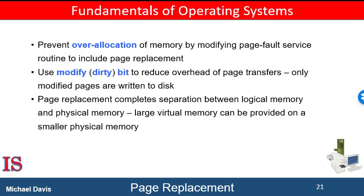We must solve two major problems to implement demand paging: we must develop a frame allocation algorithm and a page replacement algorithm. If we have multiple processes in memory, we must decide how many frames to allocate to each process, and when page replacement is required, we must select the frames to be replaced. Even slight improvements in demand paging methods yield large gains in system performance. There are many different page replacement algorithms, and in general we want the one with the lowest page fault rate — perhaps in the next lesson we will find it.